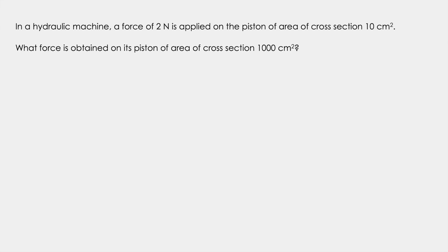In a hydraulic machine a force of 2 Newton is applied on a piston of cross sectional area 10 centimeter square. What force is obtained on its piston of cross sectional area 1000 centimeter square? So here F1 is 2 Newton, A1 is 10 centimeter square, A2 is 1000 centimeter square and we need to find out F2.